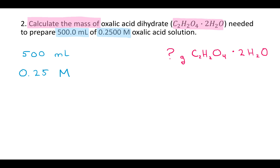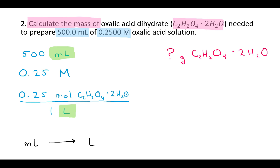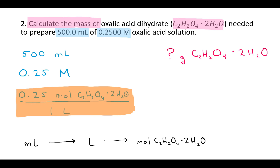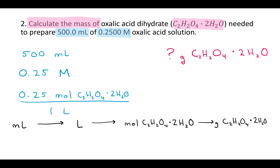Once you have those written down, if you can't make connections between them, look at the units and see if you can break any units down into simpler units. For example, that capital M — molarity — is actually moles of solute over liter of solution. So I can rewrite that as 0.25 moles of oxalic acid dihydrate over 1 liter. Now I can see connections: 500 milliliters connects with liters, molarity gets me from liters to moles, and then moles to grams using the molecular mass from the periodic table. That's my game plan.